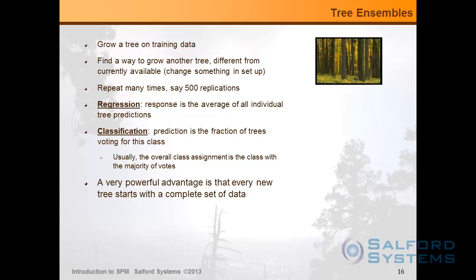First, we're going to grow a tree on the training data — that gives us one way to predict things. Then we'll find a way to grow another tree which is different from what's currently available, and we're going to repeat it many times, say 500 replications. When we work in the regression side of the story, the response will be the average of all individual tree predictions.